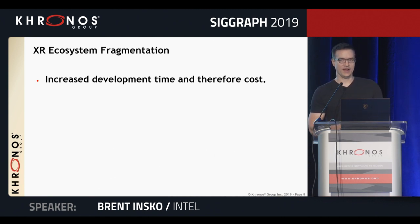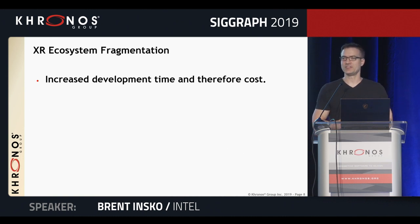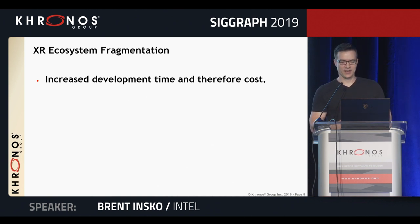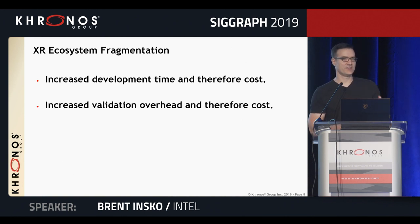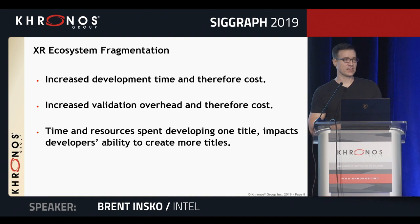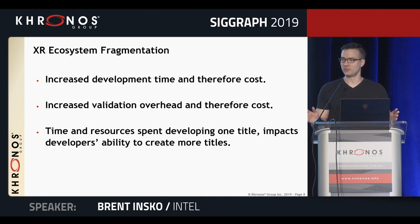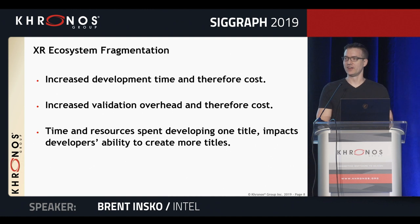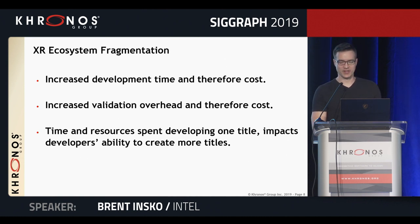Right from the beginning we already had a fragmented ecosystem, and this makes it a problem for everybody in a number of ways. First, it increases development time and therefore costs — you have to implement separate paths to handle each different platform. It also increases validation overhead because each path could introduce new bugs that only appear on that particular platform. Time and resources of developers are spent on maintaining one title across multiple platforms, impacting their ability to deliver more content, which is holding back VR adoption.